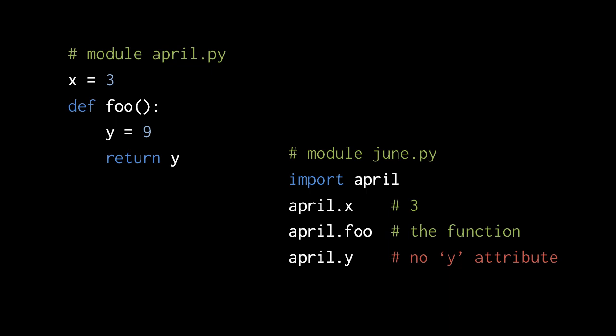Over in the june module, we can access the april module by importing it with an import statement, which we'll explain more in detail later. But in short, what happens with the import statement here is first Python looks for a module called april. If that module has not yet run, Python will execute that module and create a module object for it. And then, back in june, the import statement is implicitly an assignment. In the module june, the name april is being assigned the april module object. So then in the next line, when we write april.x, that returns 3. And if we write april.foo, that returns the function foo defined in april.